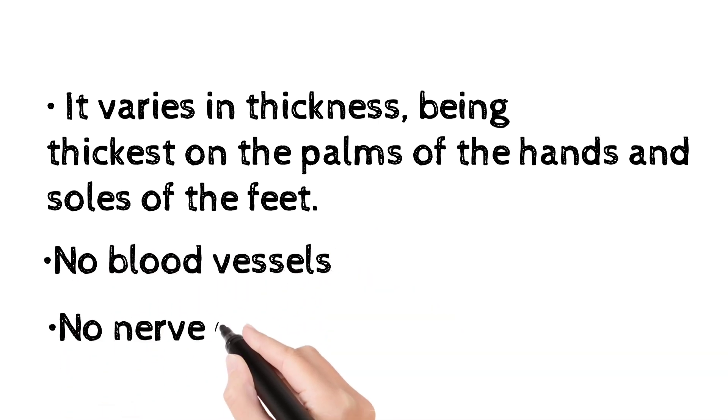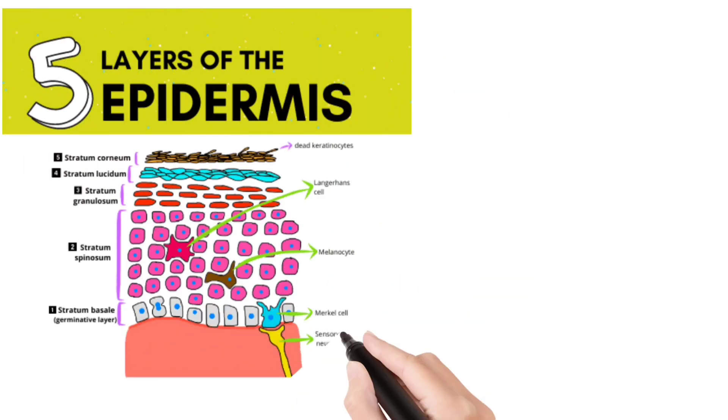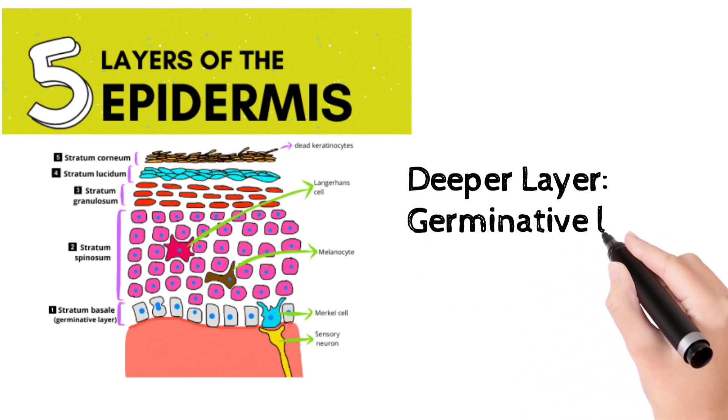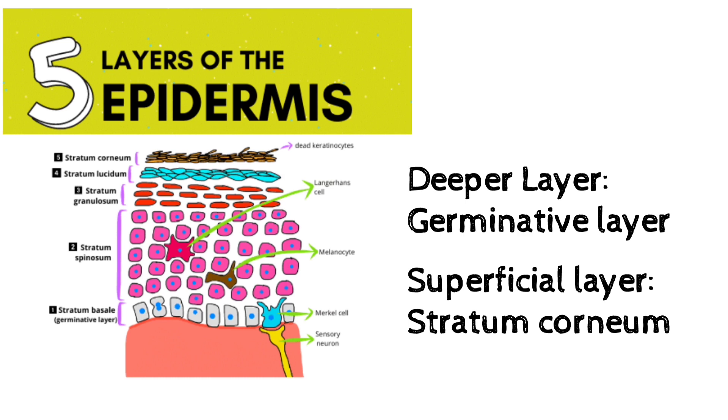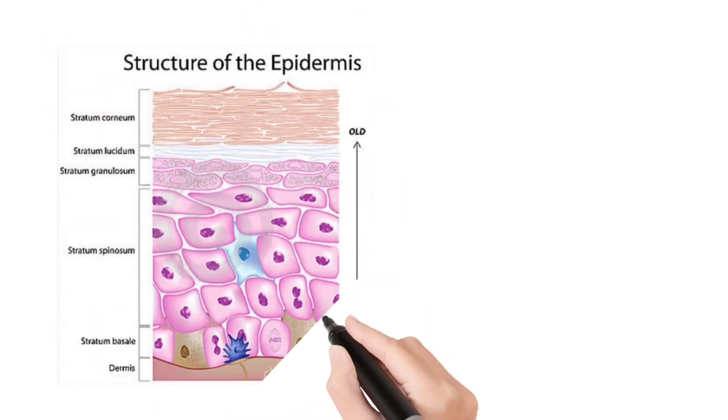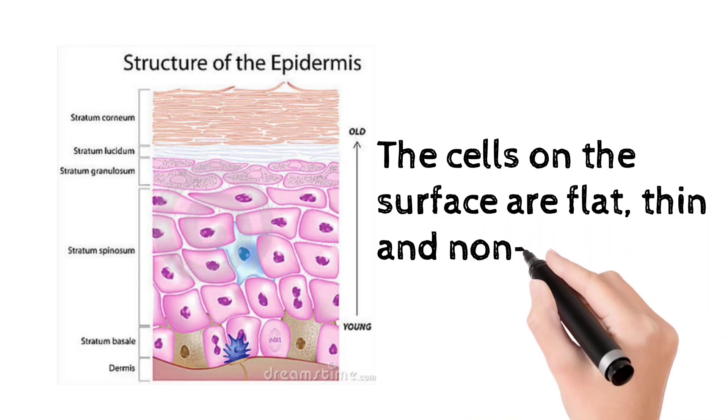The epidermis has no blood vessels or nerve endings. The epidermis has several layers - the deeper layer is the germinative layer and the superficial layer is stratum corneum. Epidermal cells are flat, thin, and non-nucleated.